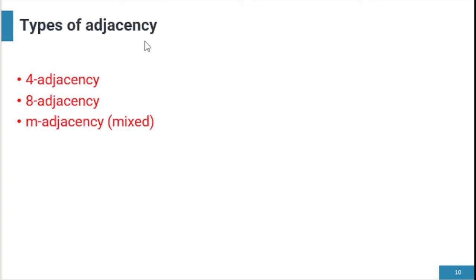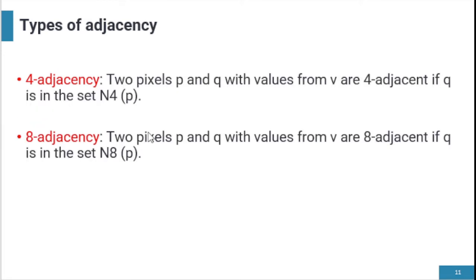There are three types of adjacency: 4-adjacency, 8-adjacency, and M-adjacency (also known as mixed adjacency). For 4-adjacency: two pixels P and Q with values from V are 4-adjacent if Q is in the set N4P. For 8-adjacency: pixels P and Q with values from V are 8-adjacent if Q is in the set N8P.